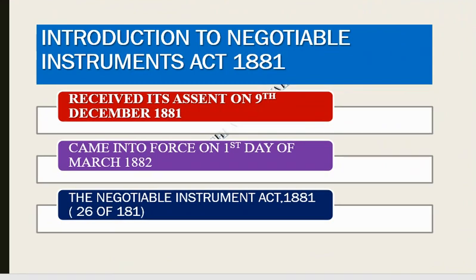First of all, we see that the Negotiable Instrument Act was accepted on December 9, 1881, and it was operationalized from the first day of March 1882. In this act there are 147 sections, and it is applicable to the whole of India.